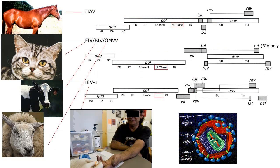HIV is a lentivirus on the basis of its genome and life cycle. It's not all that unusual for the lentiviruses. It infects immune cells, primarily CD4 positive T cells and macrophages. The other lentiviruses pursue similar, if slightly different, life cycles.